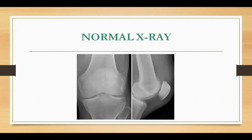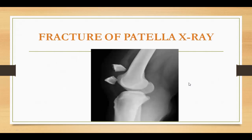In this image, you can see the normal X-ray showing the patella in both AP and lateral views. In the next image, you can see a transverse fracture of the patella where the two fragments are apart from each other.